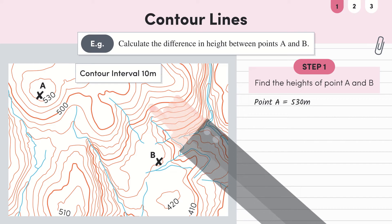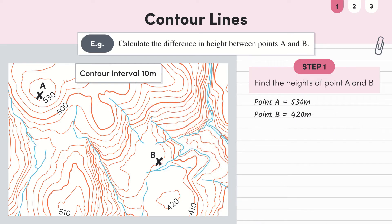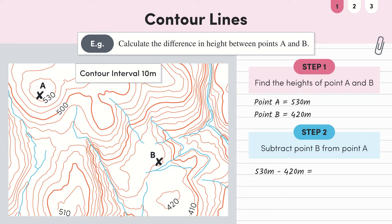We can tell that this line is above the 410 meter line as it lies between the 410 meter line and this line here which is 450 meters, so we are moving uphill. As the difference between each of these lines is 10 meters in altitude, point B lies at 420 meters. Therefore the difference between A and B is 530 meters minus 420 meters which equals 110 meters.